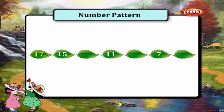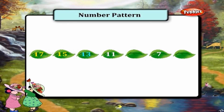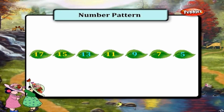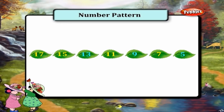17, 15, 13, 11, 9, 7, and 5. This pattern skips one number in the descending order.